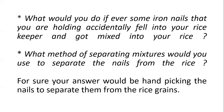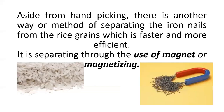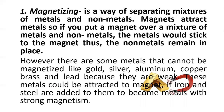For sure, your answer would be handpicking — you're going to handpick the nails to separate them from the rice grains. But there is also another way, aside from handpicking, which is much faster and more efficient: separating through the use of a magnet, or magnetizing. You can see that the nails efficiently stick to the magnet, so the rice becomes free from the nails. Magnetizing is a way of separating mixtures of metals and non-metals. Magnets attract metals, so if you put a magnet over a mixture, the metals stick to the magnet and the non-metals remain in place.